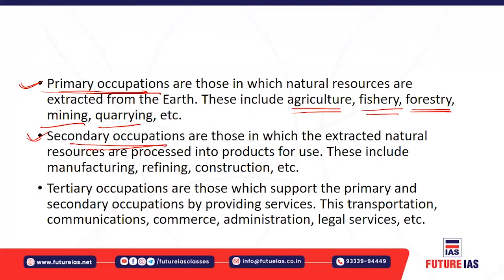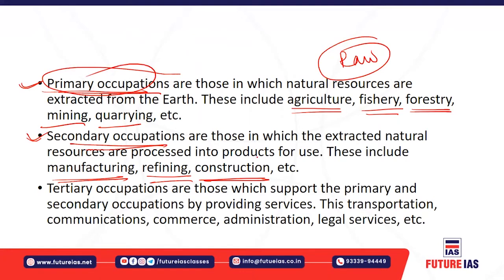Secondary occupations involve the conversion of raw materials into processed goods — manufacturing, refining, and construction. The raw material collected from the primary sector is processed in the secondary sector, resulting in products for use by people.